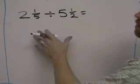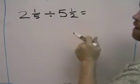To divide fractions, the first thing you need to do is change both numbers into a fraction.